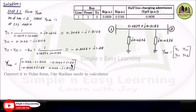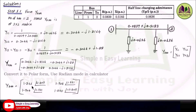Now we can convert the Y-bus into polar form — use radian mode in the calculator while doing that. We obtain Y11 equal to 1.842 angle minus 1.405, and Y12 equal to 1.904 angle 1.731, and similarly for the other two terms. This completes Step 1: we have formed the Y-bus and converted it into polar form.